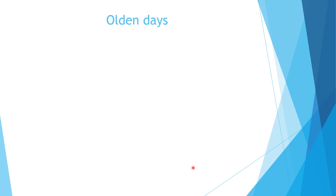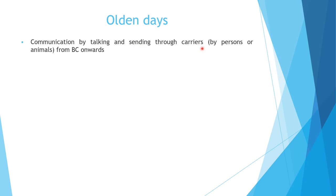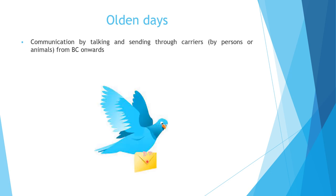In the olden days, communication was done by talking and sending through carriers. If you wanted to communicate, a person or animal or bird could travel carrying the message. Here a bird carries a letter — the letter is the message and the pigeon acts as a carrier. The traveling path is the channel. In the channel there can be noise; for example, rain can get the letter wet, which decreases the information — rain is the noise.